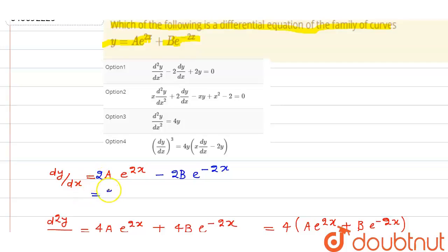This thing can be written as 2y minus, this is 2b e to the power minus 2x. So it will be 2y minus 4 e to the power minus 2x.